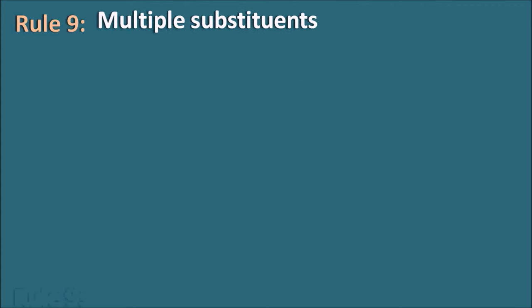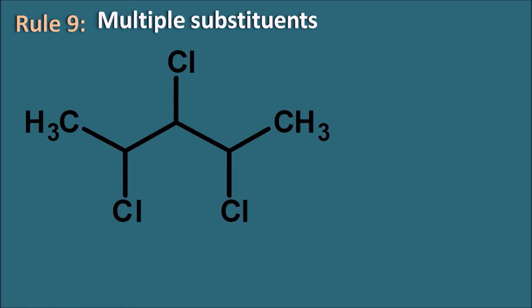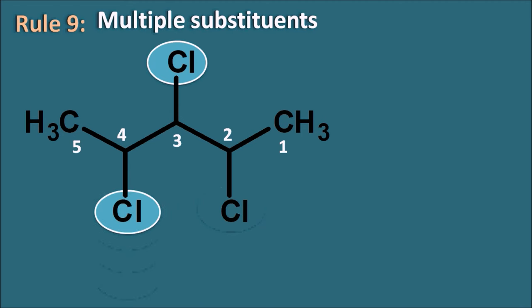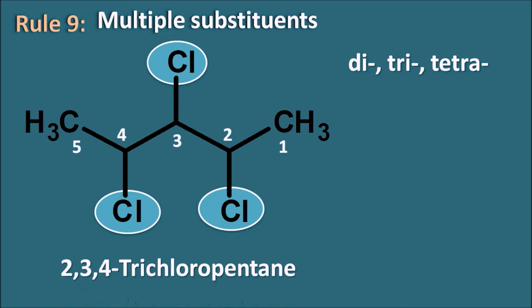Rule 9: multiple substituents. Example: a 5-carbon parent chain with three chlorine groups at positions 2, 3, and 4. When the same substituent appears more than once, we use prefixes like di, tri, tetra. Three chlorines give trichloro, and the name is 2,3,4-trichloropentane.